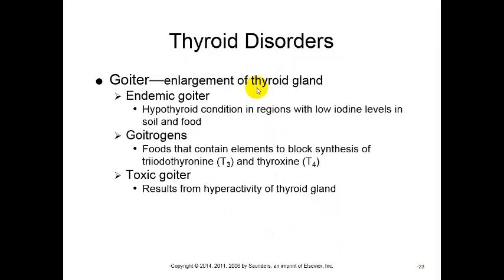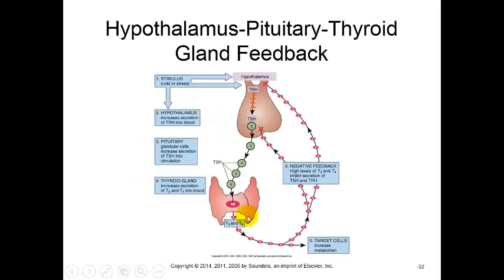We can look at different breakdowns of the system. In the case of a goiter - an enlargement of the thyroid - it can be caused for several different reasons. One is an endemic goiter, due to a hypothyroid condition where there are low iodine levels in the soil and the food. T3 and T4 hormones contain the element iodine, which is required for their production. If TSH is produced but there's no T3 and T4, these hormones cannot go back up and shut off TRH and TSH.